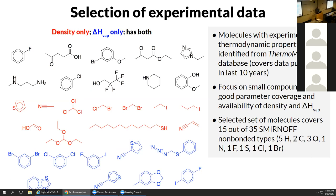We're focusing on small compounds with good parameter coverage. Our selected set of molecules covers 15 out of 35 non-bonded types. Even though this doesn't seem like too much, out of the ones we don't cover, a lot are things like ions or HCl, HBr - so the 15 out of 35 types we're optimizing actually covers a fairly good swath of chemical space.